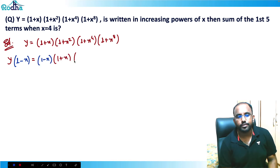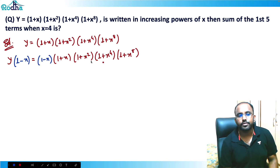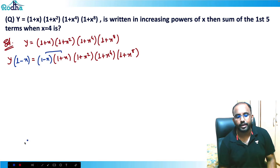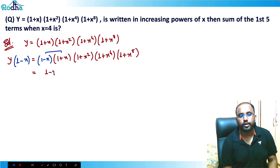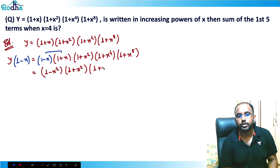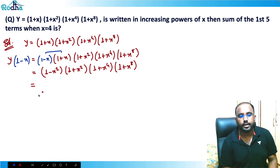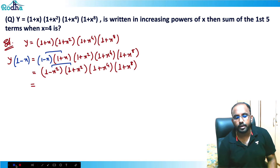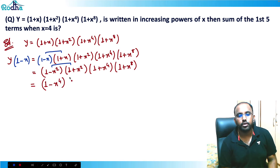Now you can observe what happens: (1 - x) and (1 + x) combine using the identity (a + b)(a - b) = a² - b², giving (1 - x²). Then we still have (1 + x²)(1 + x⁴)(1 + x⁸). We can apply the same identity again — multiplying (1 - x²)(1 + x²) gives (1 - x⁴).